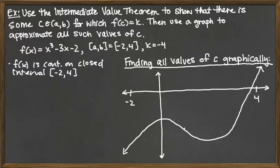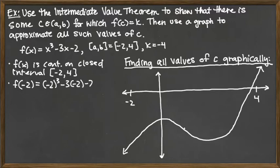The second thing we have to assess is where K is. K equals negative 4 is given, and we need to know that K is between the function values we get when we plug in the endpoints of the given interval. So let's plug in negative 2: we get negative 2 cubed minus 3 times negative 2 minus 2.